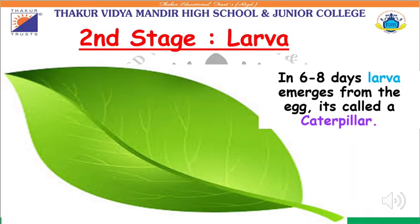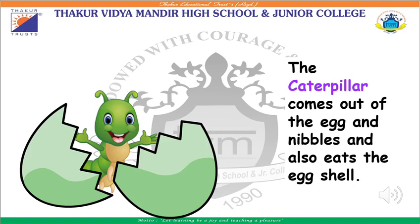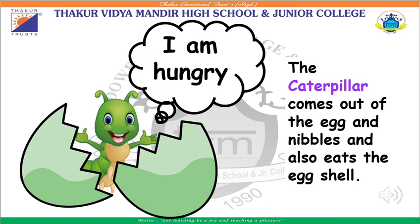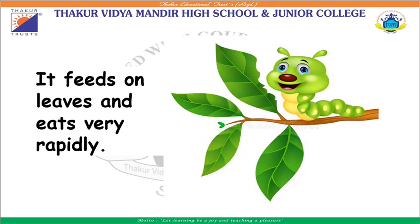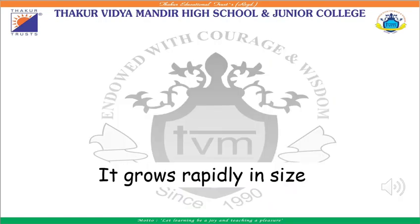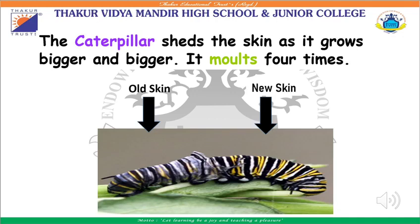After six to eight days, a larva emerges from the egg. It is also called a caterpillar. This is the second stage of the life cycle. This caterpillar that emerges from the egg is very hungry. It nibbles the leaves and even eats away the egg shell from which it is born. This hungry caterpillar eats very rapidly and grows in size day by day. It grows so big that it cannot fit into its old skin, so it develops a new skin and sheds away the old skin. This process of shedding the old skin is called molting. A caterpillar molts four times.